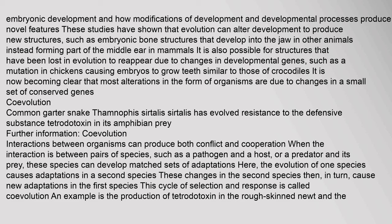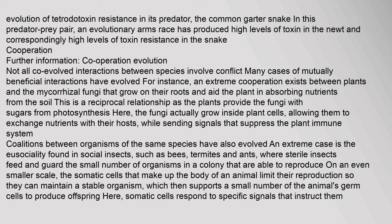Co-evolution: The common garter snake Thamnophis sirtalis sirtalis has evolved resistance to the defensive substance tetrodotoxin in its amphibian prey. When the interaction is between pairs of species, such as a pathogen and a host or a predator and its prey, these species can develop matched sets of adaptations. The evolution of one species causes adaptations in a second species, which then in turn cause new adaptations in the first species — this cycle of selection and response is called co-evolution. An example is the production of tetrodotoxin in the rough-skinned newt and the evolution of tetrodotoxin resistance in its predator, the common garter snake, producing high levels of toxin in the newt and correspondingly high levels of toxin resistance in the snake.